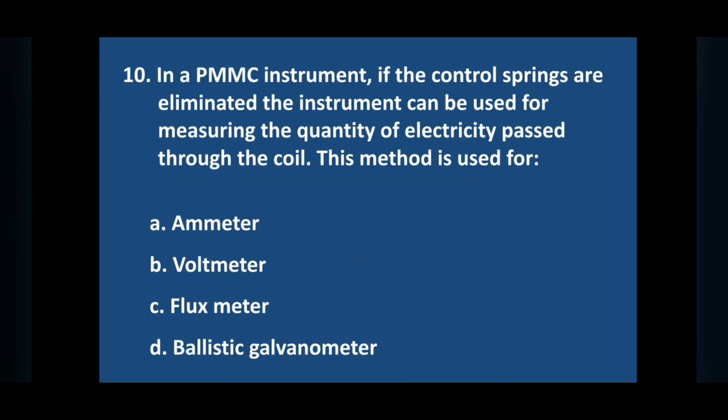Question number 10: in a PMMC instrument, if the controlling springs are eliminated the instrument can be used for measuring the quantity of electricity passed through the coil. This method is used for. Answer is option C, flux meter.